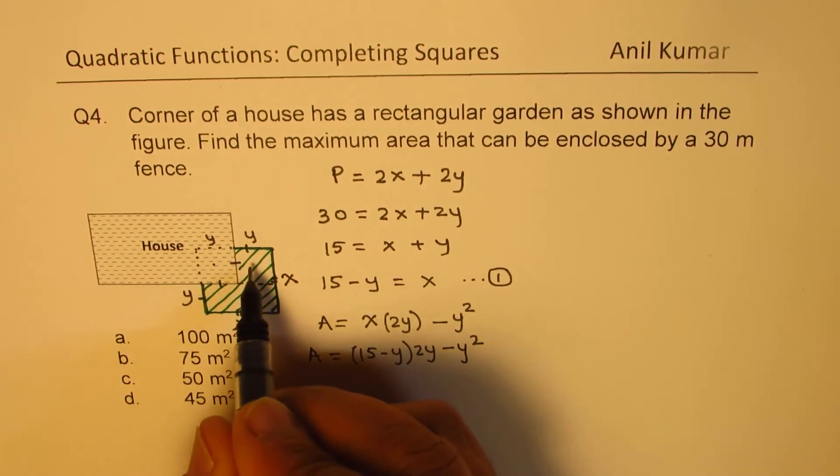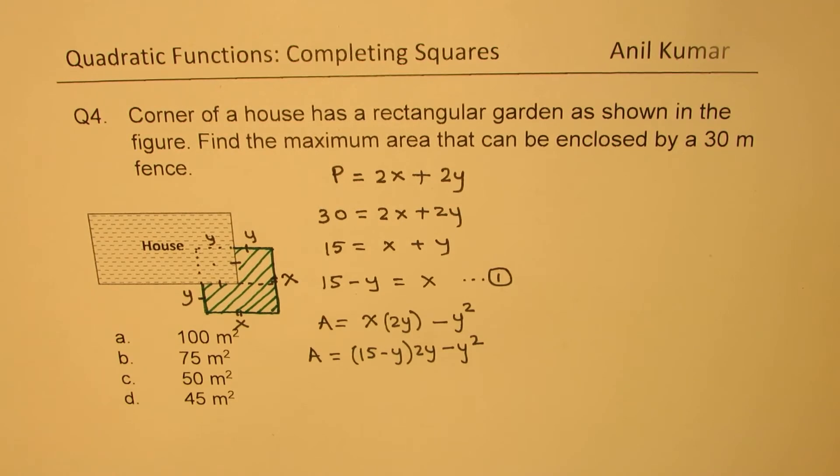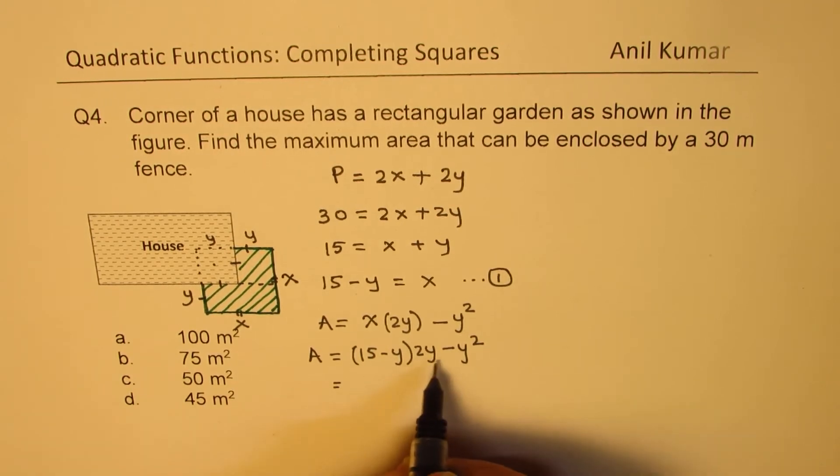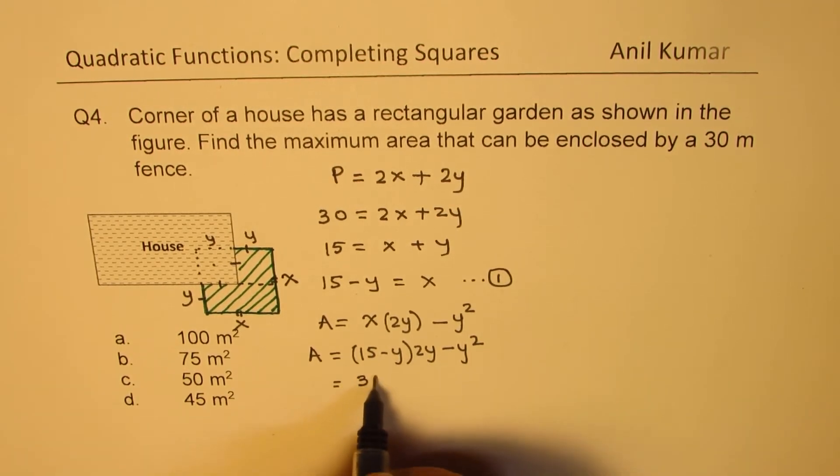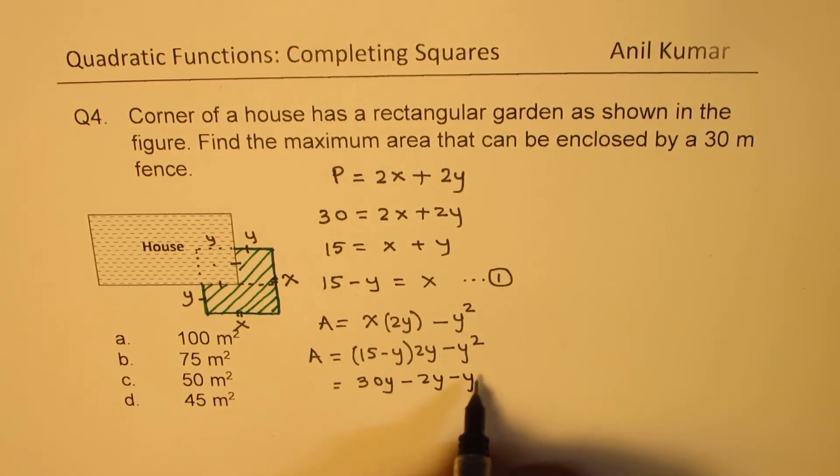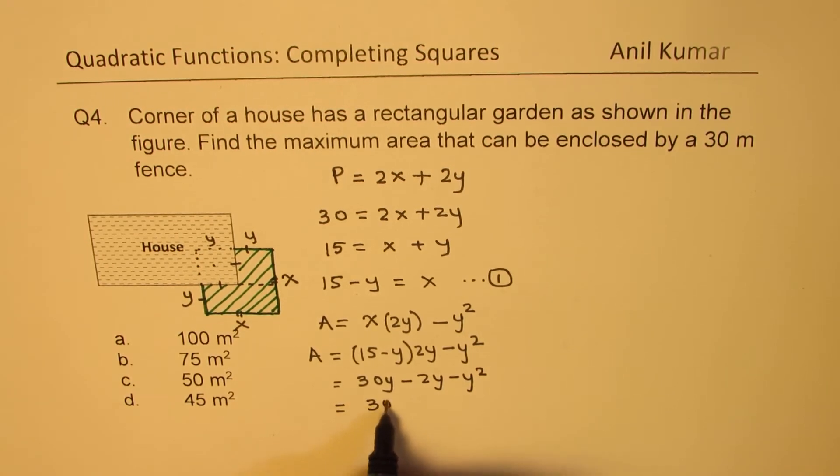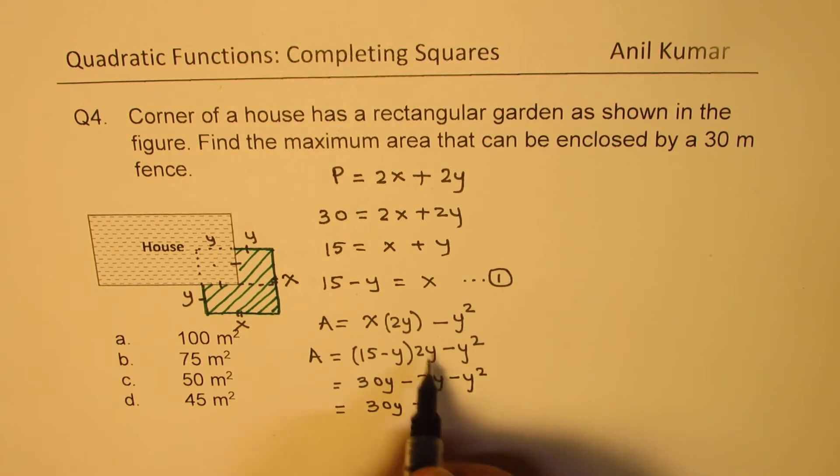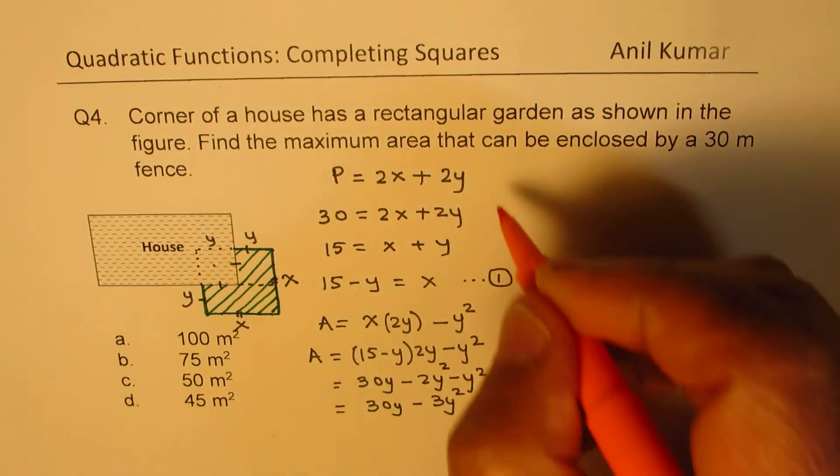Instead of x we'll write 15 - y. So the area is (15 - y)(2y) - y². We have to take away the square since that is not the garden. Opening the bracket we get 30y - 2y² - y², which gives the equation for area as 30y - 3y².